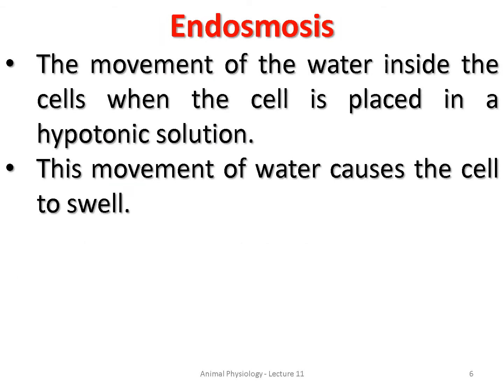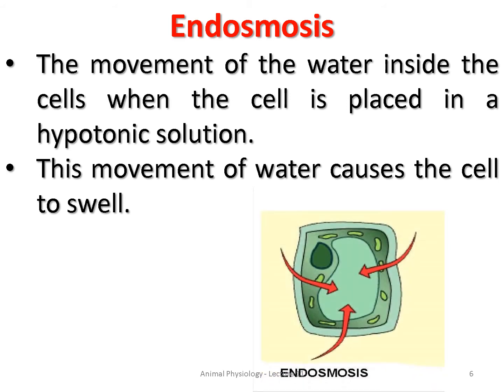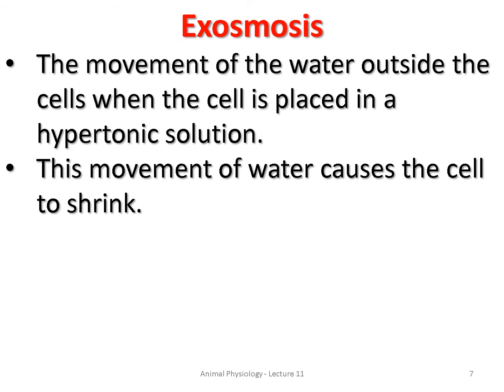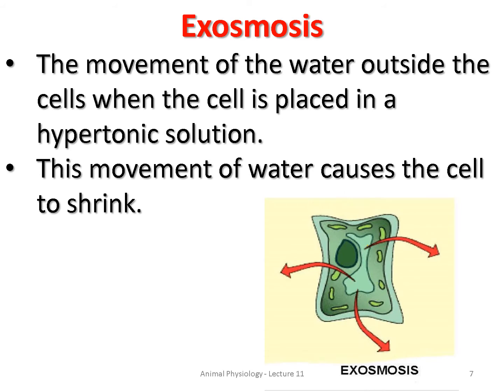Endosmosis is the movement of water inside the cells when the cell is placed in a hypotonic solution — that is, the movement of water molecules from outside into the cell. In exosmosis, there is movement of water from inside towards outside, and as a result the cell will shrink.